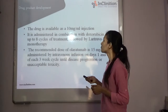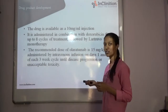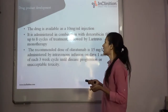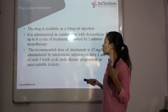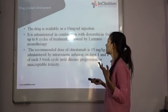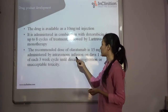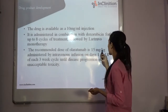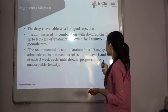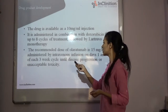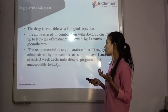In drug product development, the drug is available as a 10 mg/mL injection for intravenous use. It is administered in combination with Doxorubicin for up to 8 cycles of treatment, followed by Olaratumab monotherapy. The recommended dose is 15 mg/kg administered by IV infusion on day 1 and day 8 of each 3-week cycle until disease progression or unacceptable toxicity.